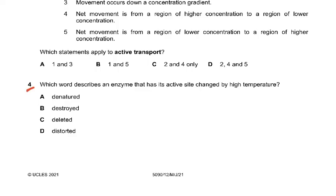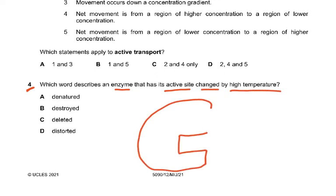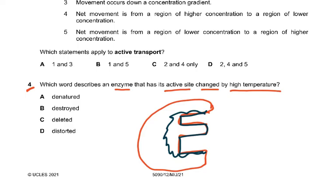Question 4: which word describes an enzyme that has its active site changed by high temperature? The active site is the depression on the enzyme. When enzymes are boiled, the active site loses its shape and the substrate no longer fits. The correct technical biological term for this is 'denatured' — not destroyed, deleted, or distorted.